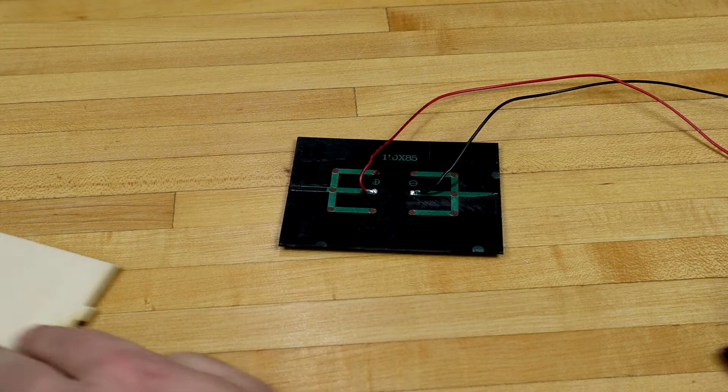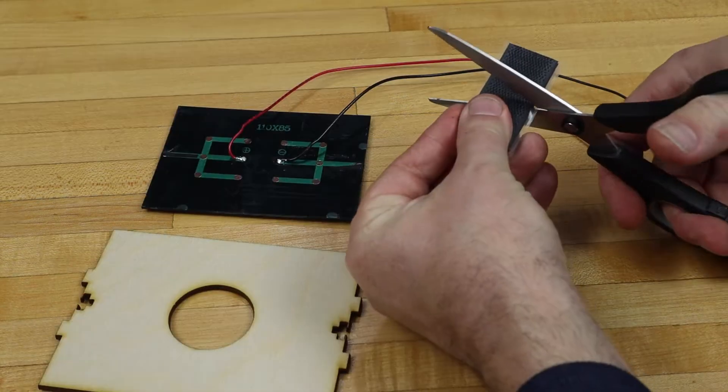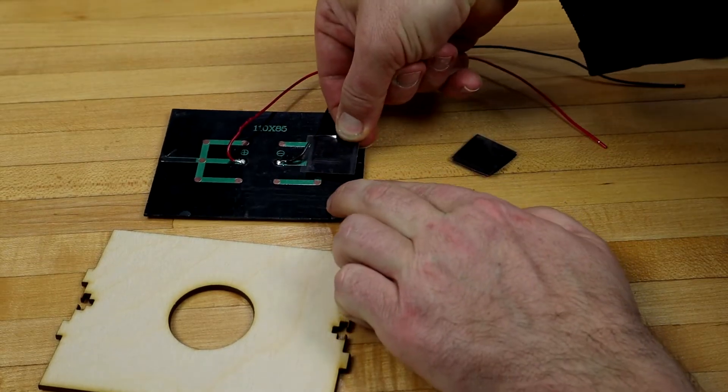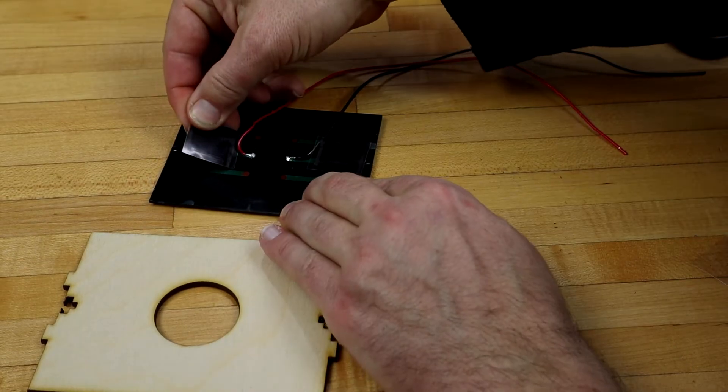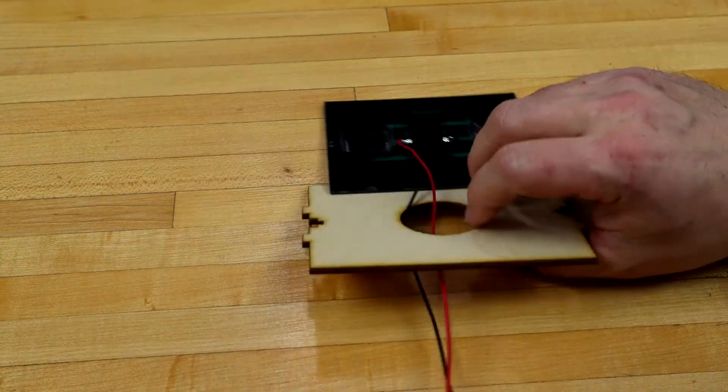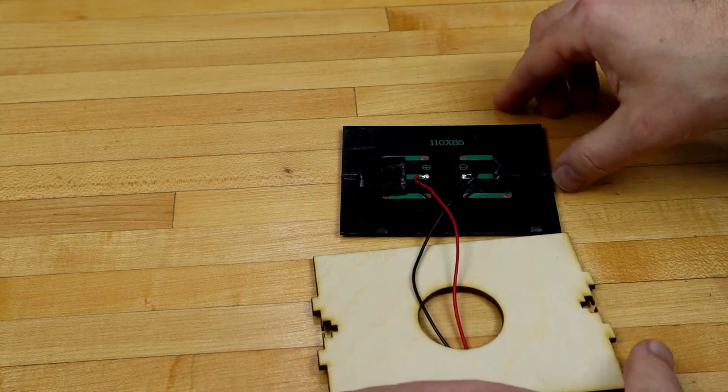Next, get the solar cell, Velcro, and wooden mount for the cell. Cut the Velcro in half. Place the Velcro on the back of the solar cell so it lines up with the wooden mount. Remove the adhesive backing and stick the solar cell to the wooden mount with the Velcro.